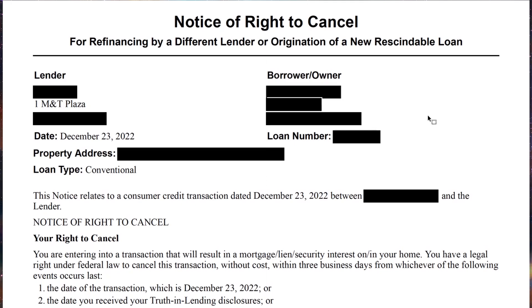Before we get started with the script, there's one thing you need to know about the notice of right to cancel. Nine times out of ten, there's more than one copy in there. You're going to get them to sign and date all the copies that are there, but you leave one of the copies with the signer.